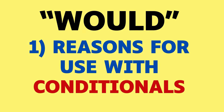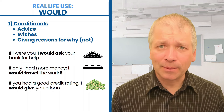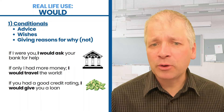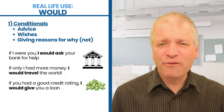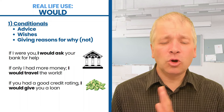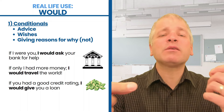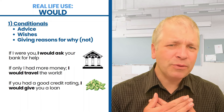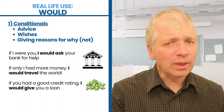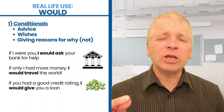Word number one: reasons for use with conditionals. The first is when giving advice. Look at the example with the bank. If I were you, I would ask your bank for help. This is so common in spoken English, where we use this second conditional form — if I were you — to give advice. Instead of saying you should ask your bank for help, we say: if I were you, I would ask your bank for help. It's a way of giving advice with a little bit of distance, by making it hypothetical. Rather than using should for advice, we make it a little bit more distant and polite by using would in a second conditional sentence.